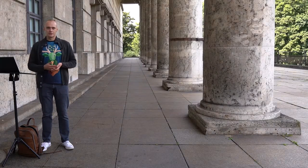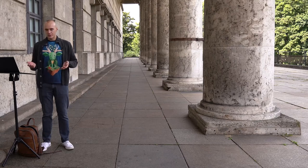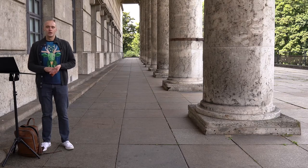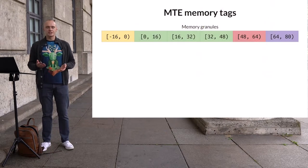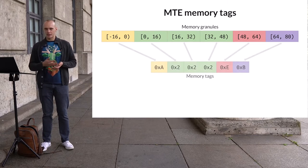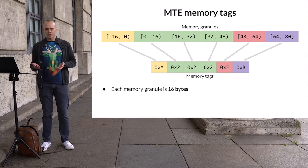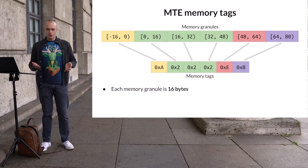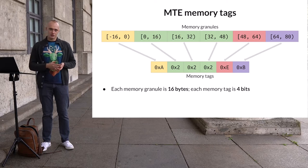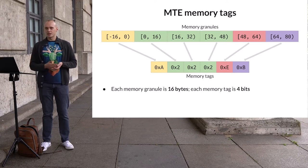Now let's talk about memory tags — this is where things get a bit more complicated. With MTE, every 16 bytes of physical memory have a corresponding memory tag. In other words, the size of a memory granule for MTE is 16 bytes. In turn, the size of each memory tag is 4 bits, which matches the size of a pointer tag.